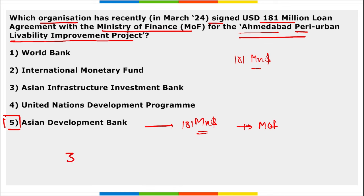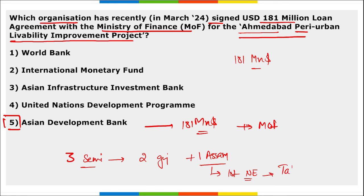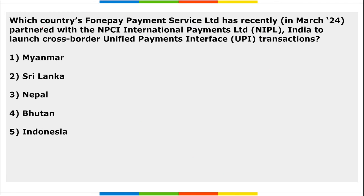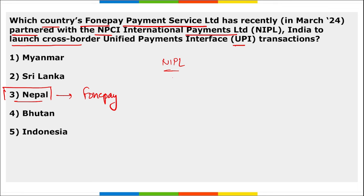Remember: three semiconductor manufacturing plants will be set up — two in Gujarat and one in Assam, which will be the first semiconductor manufacturing plant in Northeast India, inaugurated by Ratan Tata. Next, Nepal's PhonePe Payment Service Limited recently partnered with NPCI International Payments Limited (NIPL) to launch cross-border UPI transactions in Nepal.